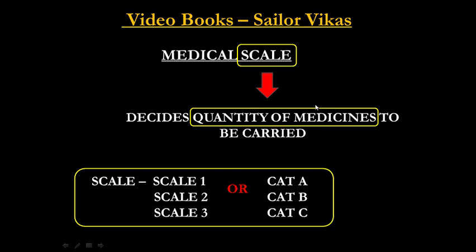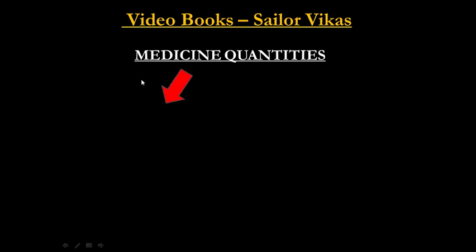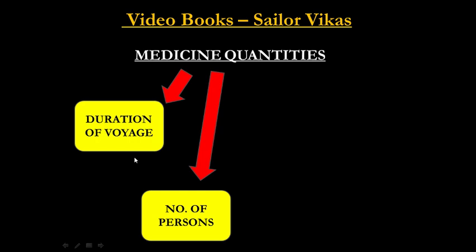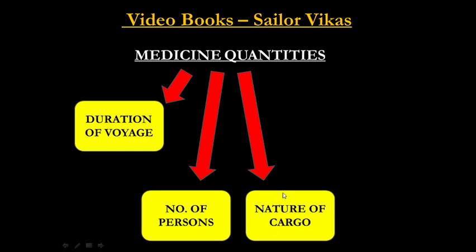The scale decides how much quantity of medicines to carry — for example, 10 tablets. Medicine quantities depend on four factors. The first factor is duration of voyage — how long is the trip. The second factor is number of persons on board, because in passenger ships more medicines are required. The third factor is nature of cargo — for dangerous cargo, additional medicines are needed.